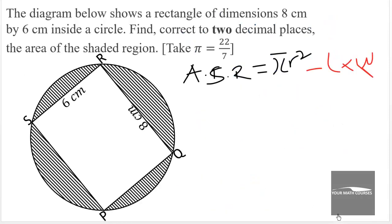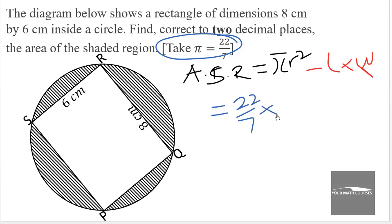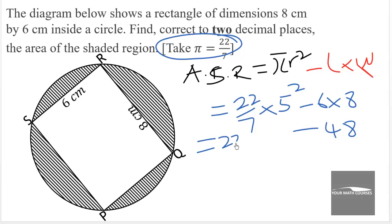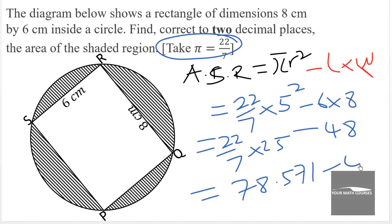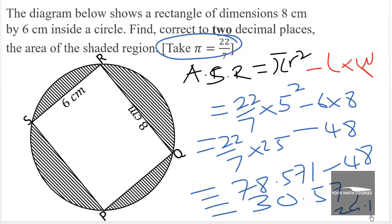The area of the shaded region equals 22 over 7 times 5 squared, minus 6 times 8. So that is 22 over 7 times 25, minus 48. This gives 78.571 minus 48, which equals 30.57 to 2 decimal places. That is the area of the shaded region in centimeters squared.